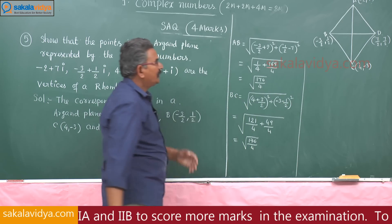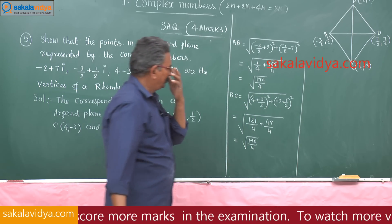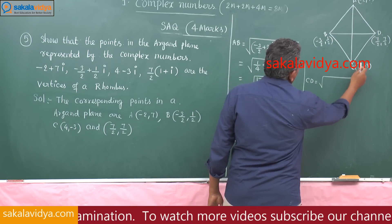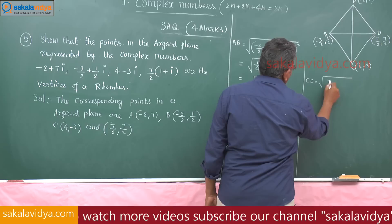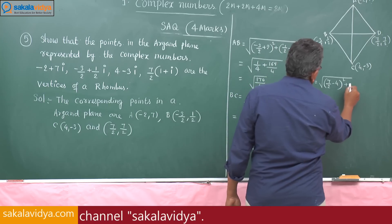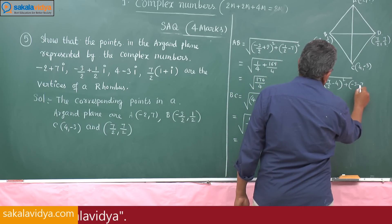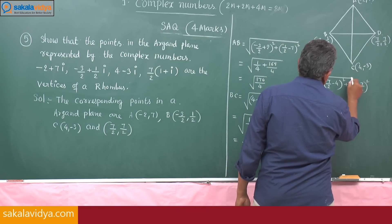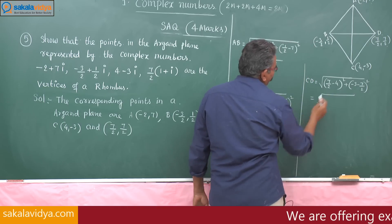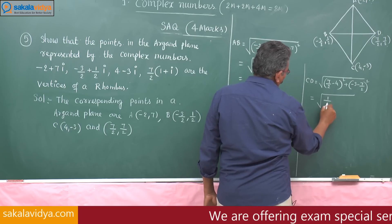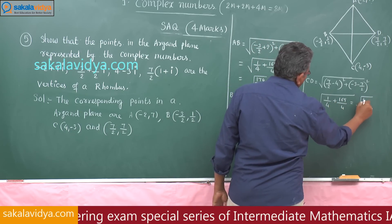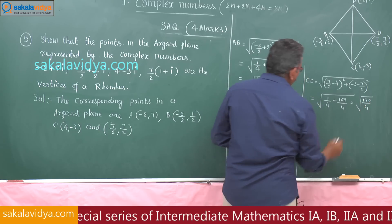Now CD: the distance between C = (4, minus 3) and D = (7 by 2, 7 by 2). This is root of (7 by 2 minus 4) squared plus (minus 3 minus 7 by 2) squared, giving root of 1 by 4 plus 169 by 4, which is root 170 by 4. So CD is also equal.